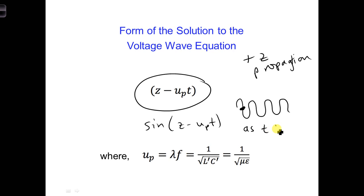so as t increases, time goes up, the position z must correspondingly also increase in order for the argument to remain zero, in order to track that position on the wave.